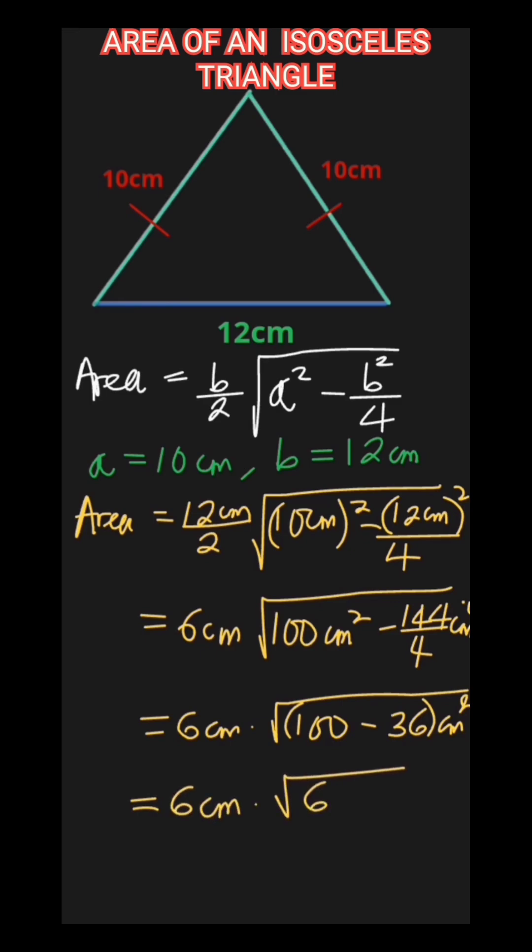The square root of 64 is 8 centimeters, so we have 6 centimeters times 8 centimeters. The area of this isosceles triangle is 48 centimeters squared.